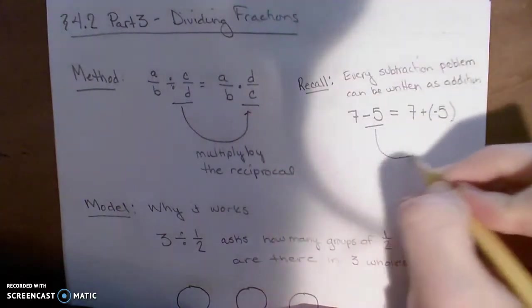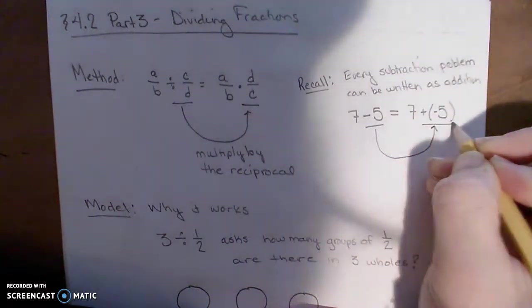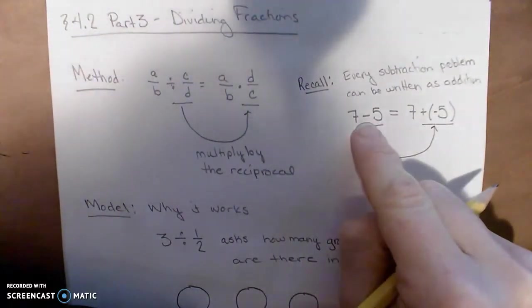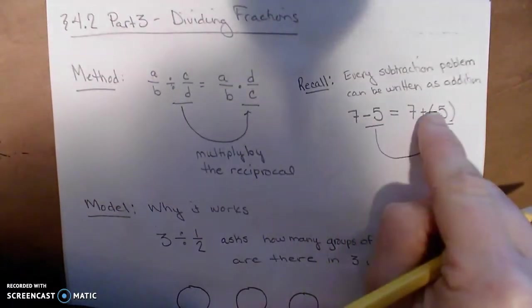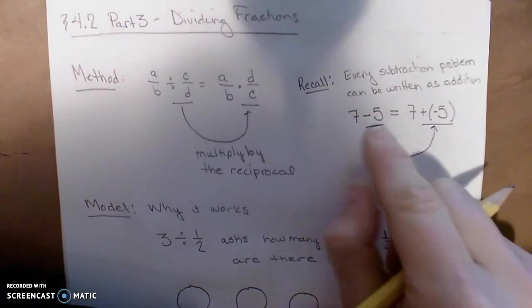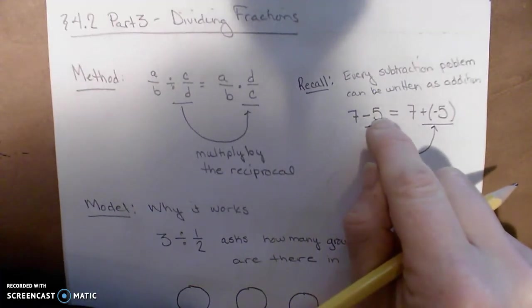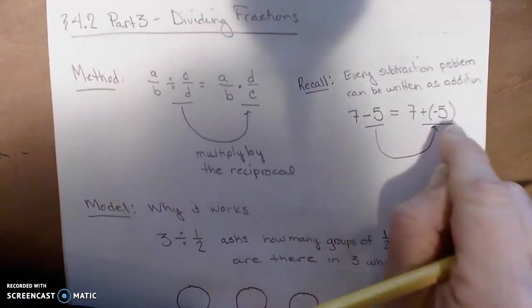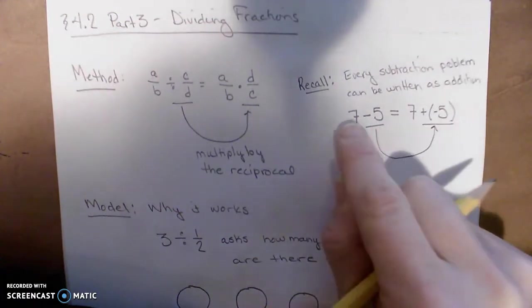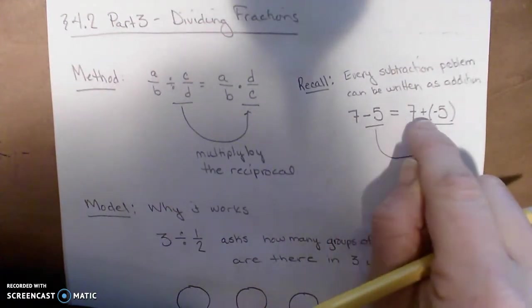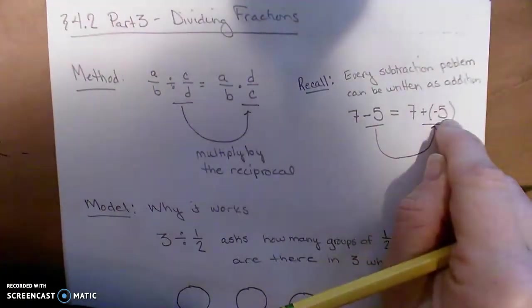Basically, what we're doing here is changing the operation from minus to plus. And if you do that, that changes the sign of the number. You do the additive opposite of 5, which is negative 5. So to do 7 minus 5, we do 7 plus the opposite of 5.